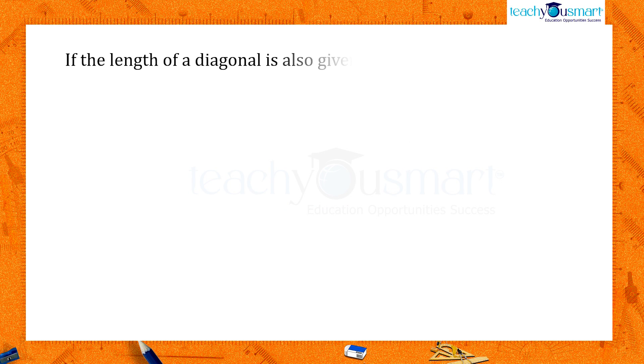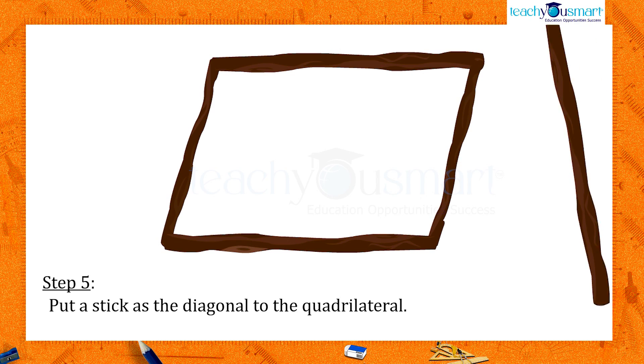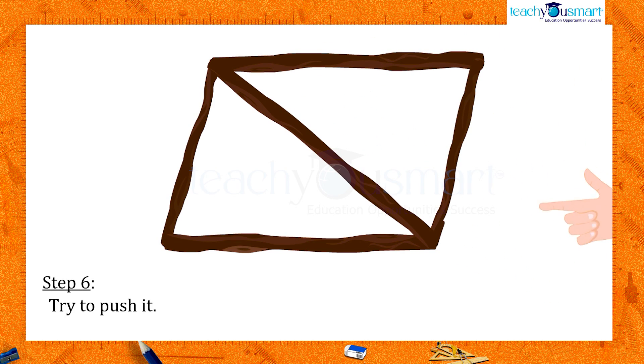If the length of a diagonal is also given, can we determine it uniquely? Let's check. Put a stick as a diagonal to the quadrilateral, now try to push it. The new stick prevents the movement it had before. So we can determine the quadrilateral uniquely.